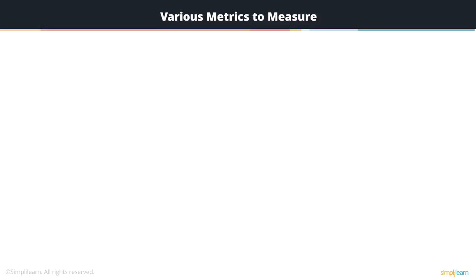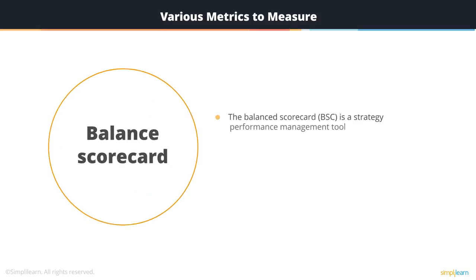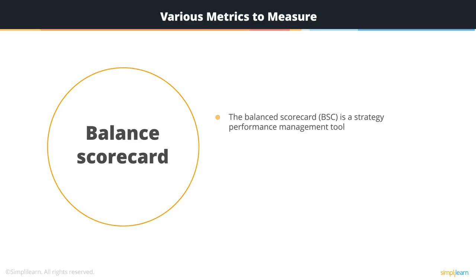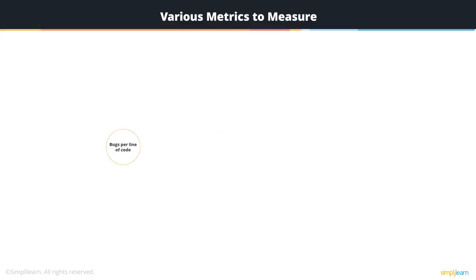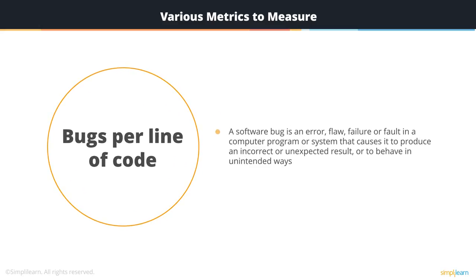There are various metrics that can be measured for software projects. You have balanced scorecards, which are a performance management tool — a semi-standard structured report supported by design methods and automation tools that managers can use to keep track of execution of activities by different team members and monitor the consequences arising from those actions. You can also have a software bug measured: a bug is an error, flaw, failure, or fault in a computer program or system that causes it to produce an incorrect or unexpected result or to behave in unintended ways.